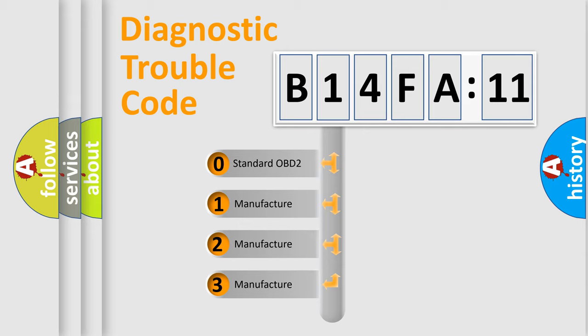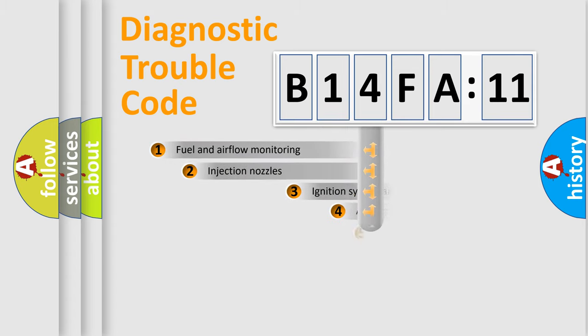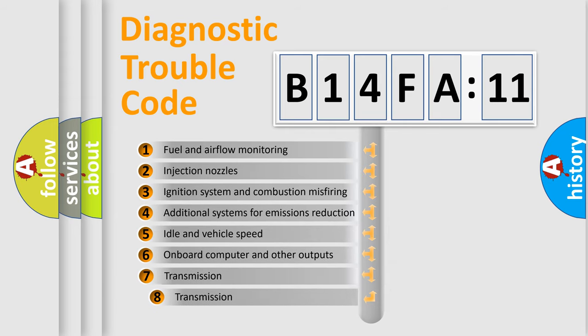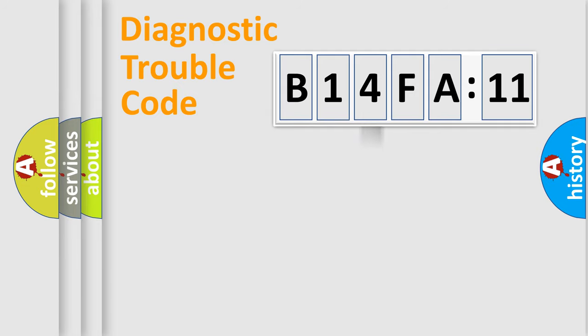If the second character is expressed as zero, it is a standardized error. In the case of numbers 1, 2, or 3, it is a more specific expression of the car-specific error. The third character specifies a subset of errors. The distribution shown is valid only for the standardized DTC code. Only the last two characters define the specific fault of the group.